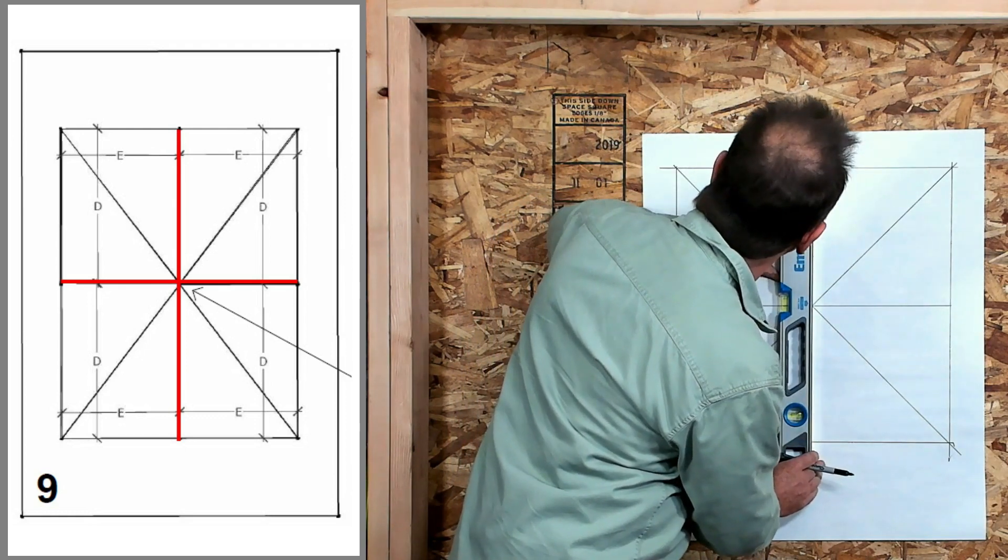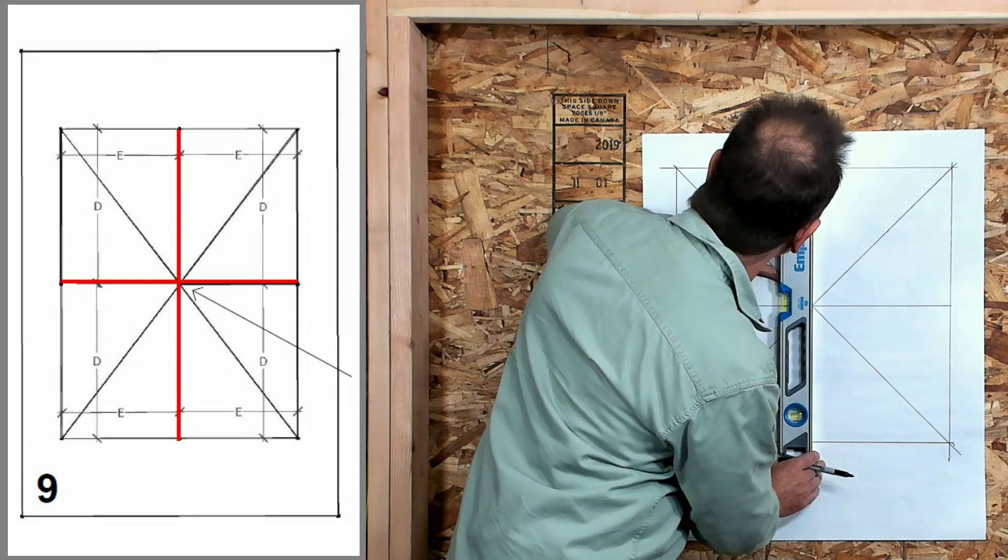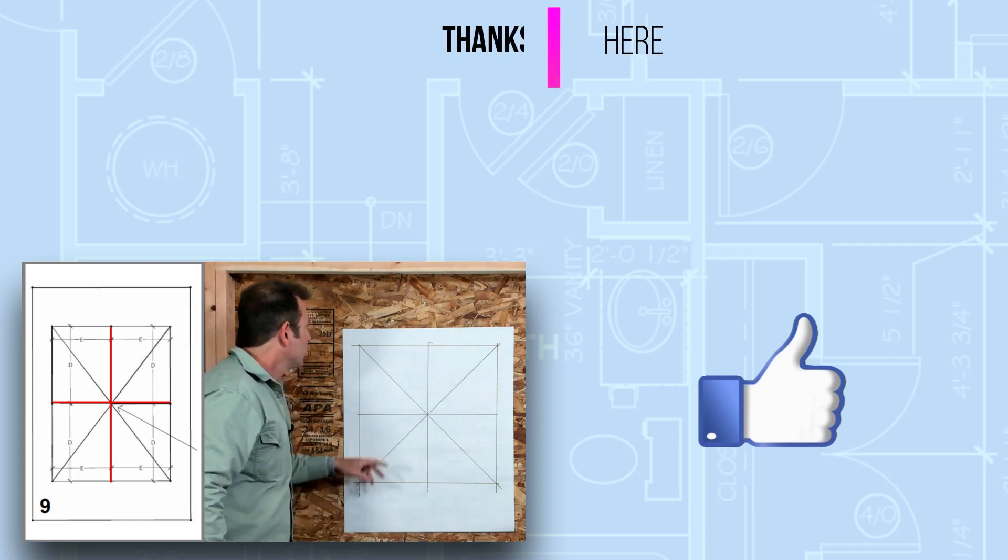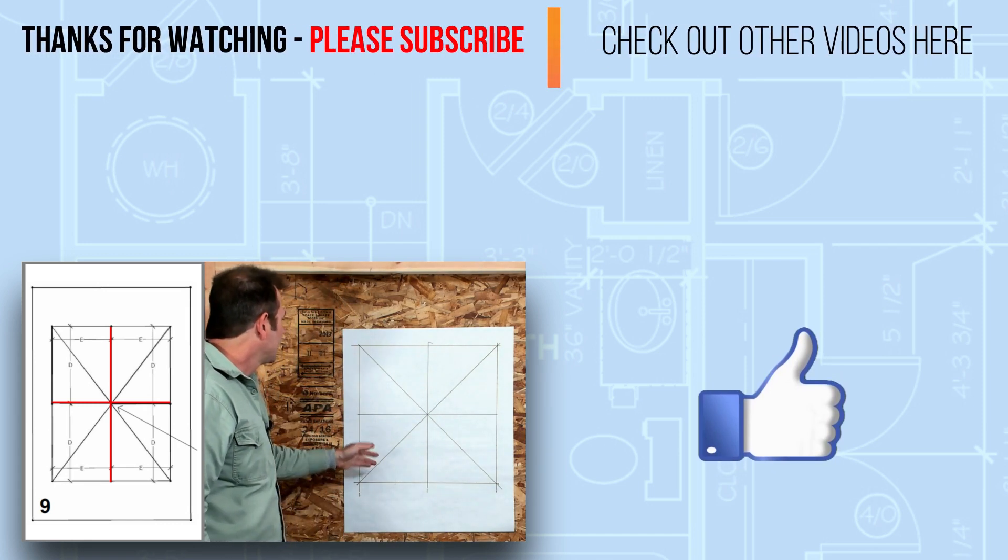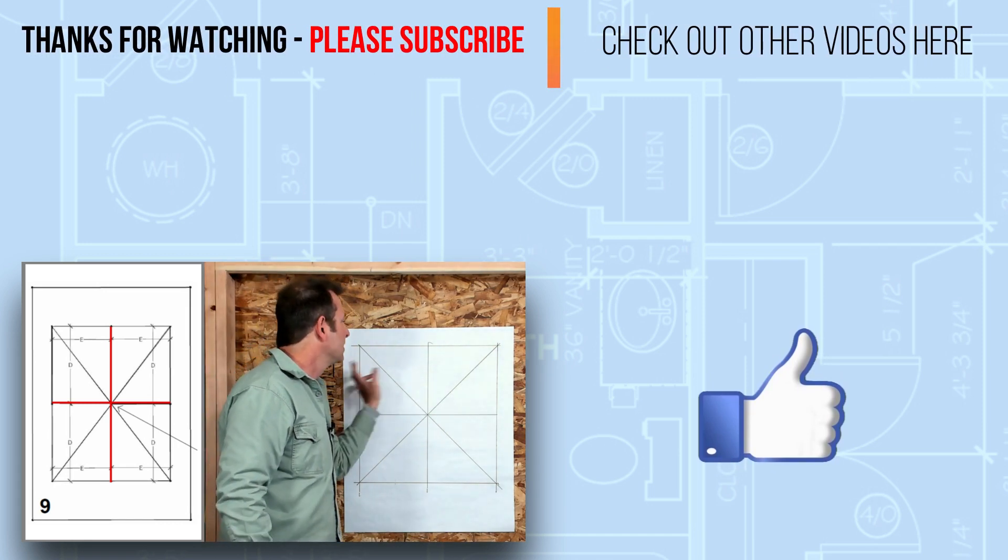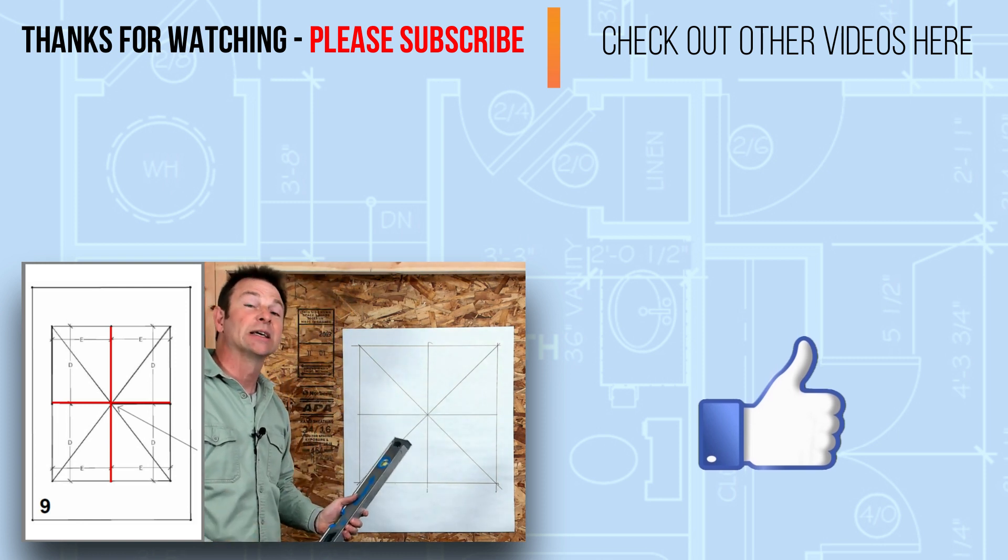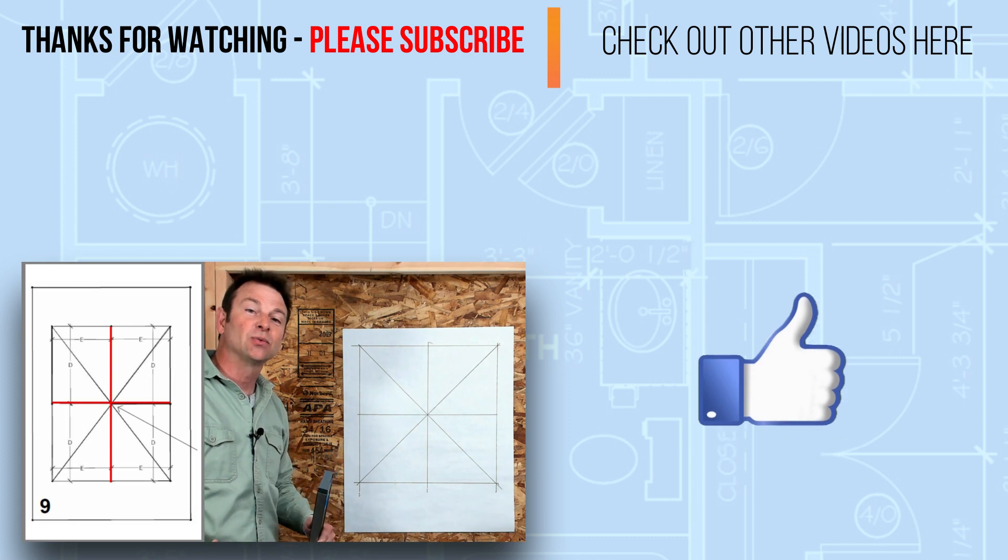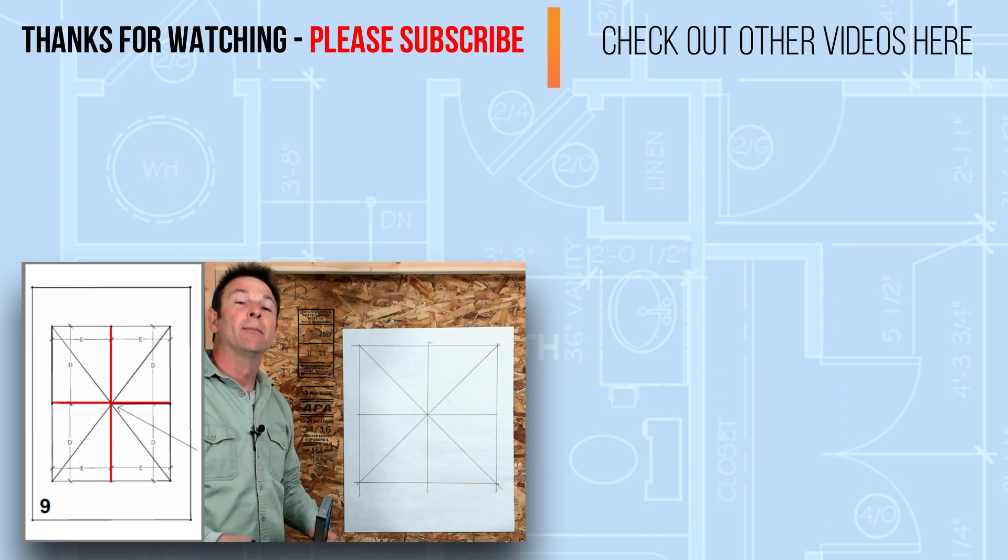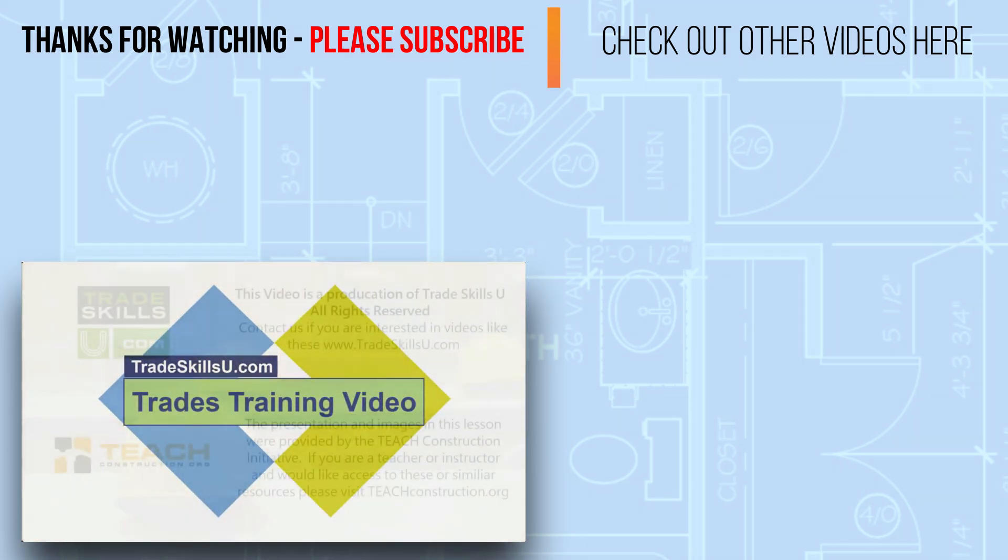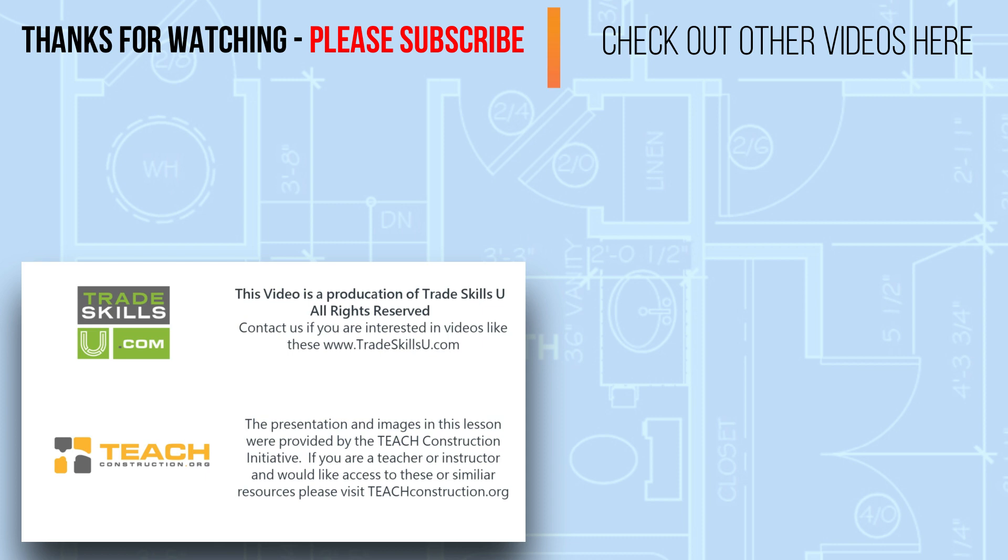Let's draw a plumb line right in the center here as well. I'm trying to center my bubble as perfectly as I can, and we're right on our mark. Now we have a third plumb line parallel to the left and right sides. You can see this tool, if you can use it accurately, can create a lot of situations that would require more complicated measuring and math to produce. This video is a production of Trade Skills. All rights reserved.